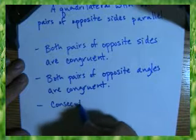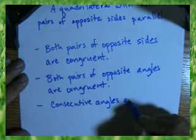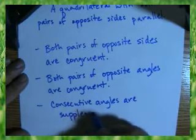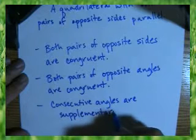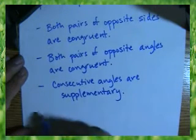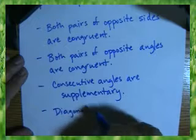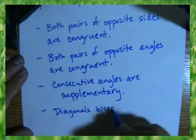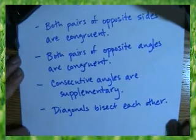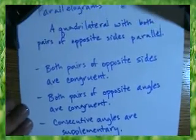Consecutive angles are supplementary. And the last one: diagonals bisect each other. There. Those are the five properties.